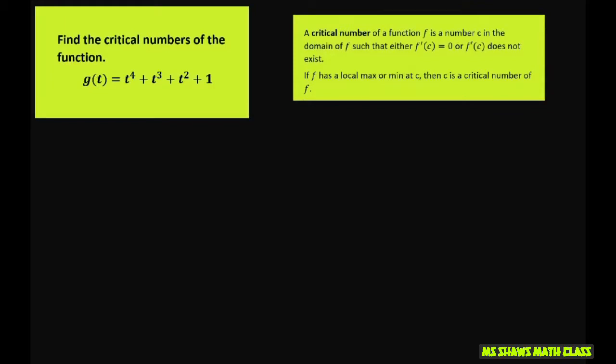So the first thing we're going to do is find the derivative and see if we have a number c in the domain such that f prime of c equals zero, or whether it doesn't exist.